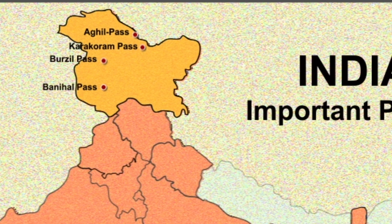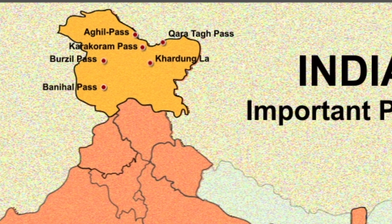Other passes are Karatang Pass and Khardungla Pass. Khardungla Pass lies on the Ladakh range north of Leh and it is the gateway to the Shayok and Nubra valleys. Shayok and Nubra are tributaries of river Indus.